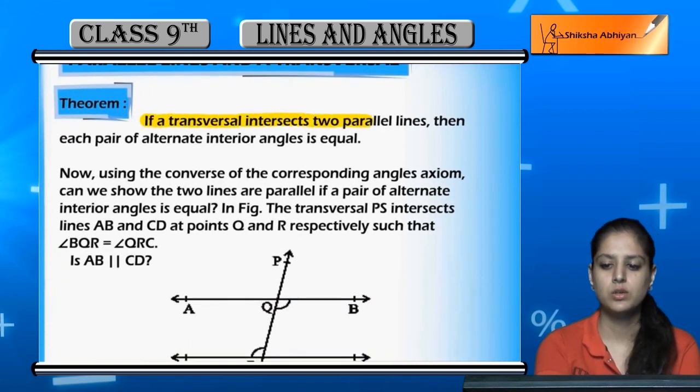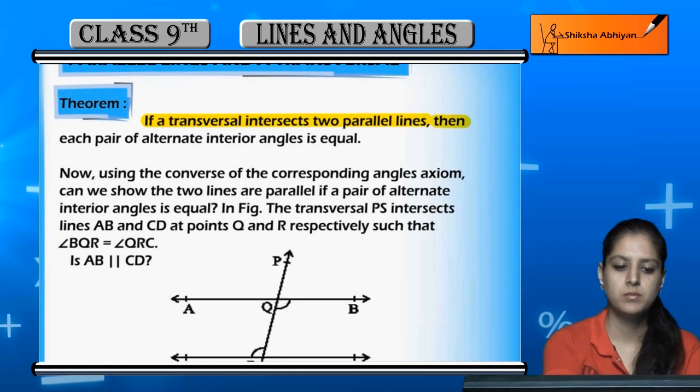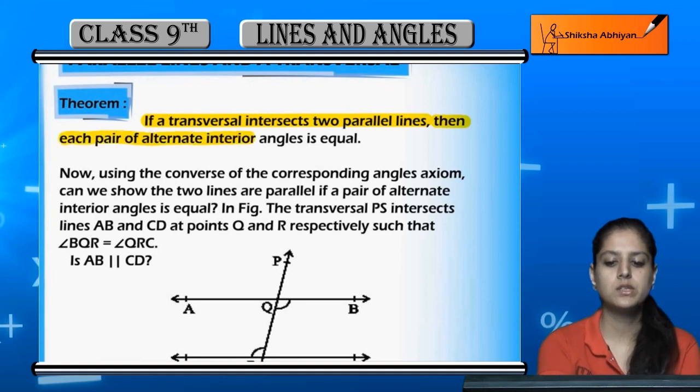If a transversal intersects two parallel lines, then each pair of alternate interior angles is equal.